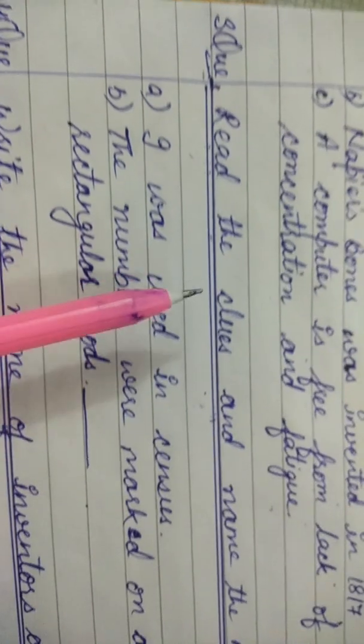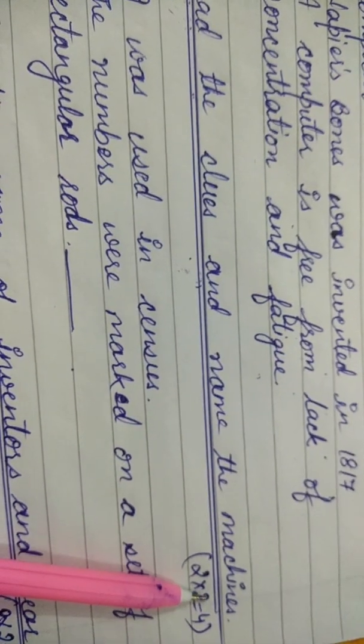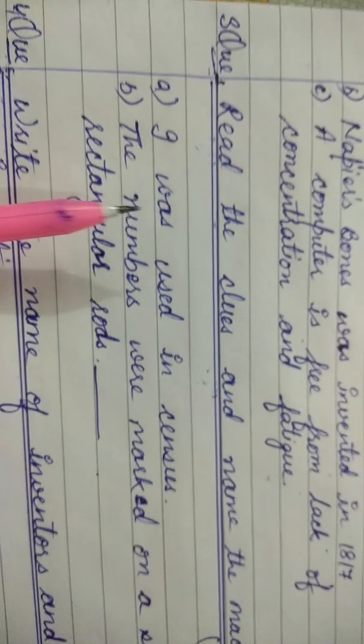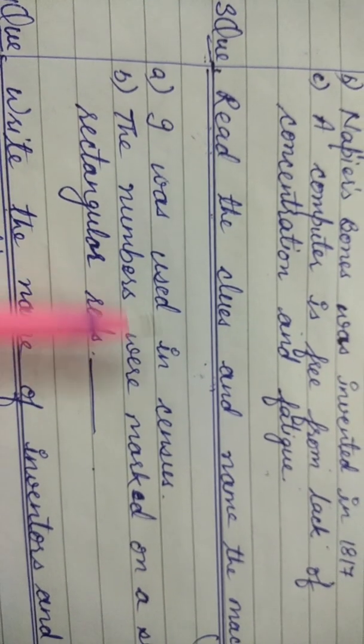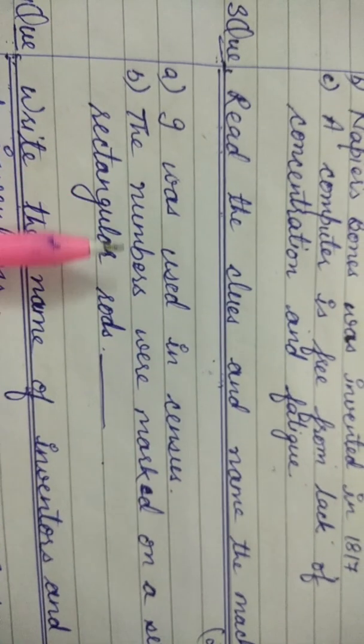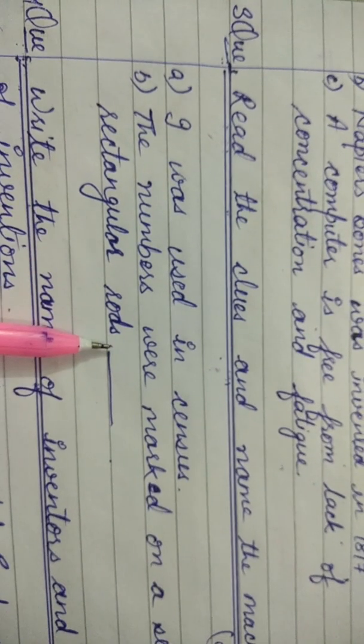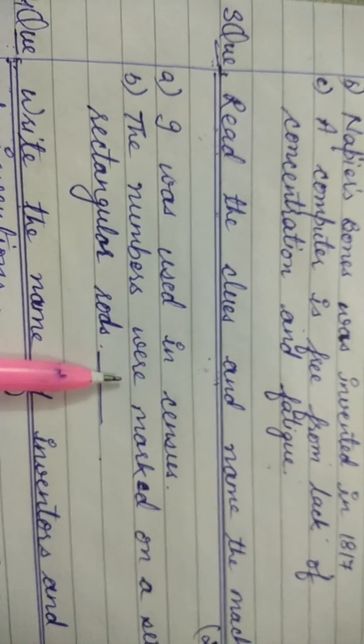Now question number three: Read the clues and name the machines. Clue number one: I was used in census. Number two: The numbers were marked on a set of rectangular rods. Total two questions, each carrying two marks, for a total of four marks.